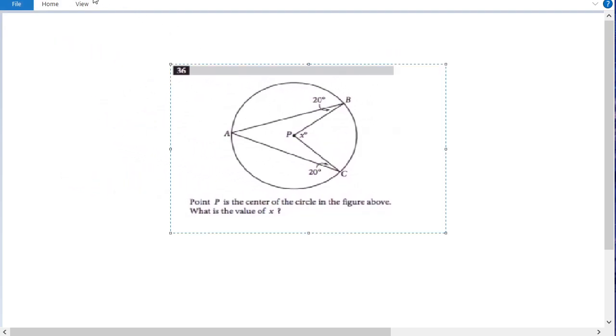So just as a general note, whenever you have a problem on the SAT where you have a shape inscribed inside of a circle, it's important to connect all points on the outside of the circle to the radius or to the central point with the radius.